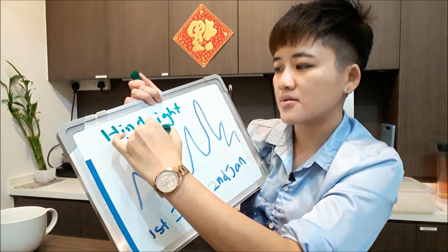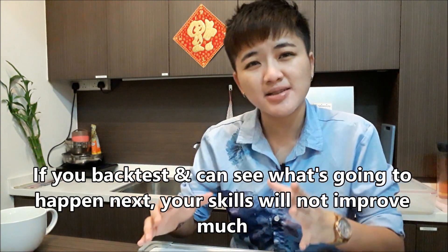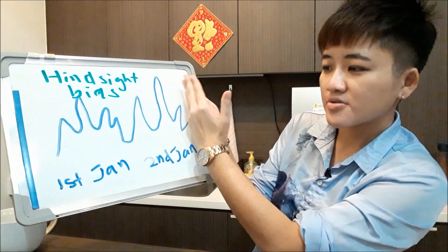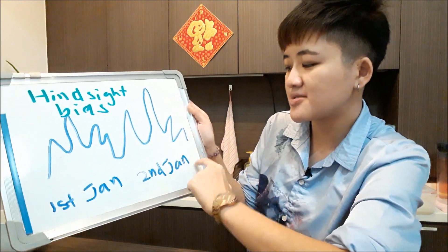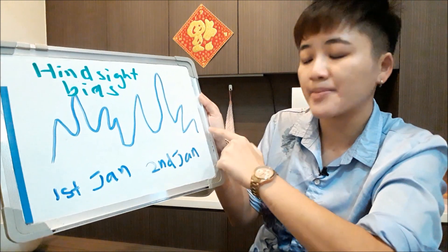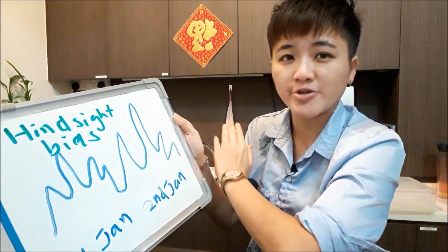This phenomenon is called hindsight bias. If you can see what's going to happen later, your mind won't be able to learn properly, because when you are trading live in the live market you are not able to see what's going to happen tomorrow or a few hours later. If you back test in such a way that you can see what's going to happen next, you aren't really trading live — you're just scanning and reading the charts. To back test properly, you need to scroll your chart all the way to the right so January 1st 6am is at the edge, with December 31st and December 30th behind it, so you can't see what happens after 6am on January 1st. Then as you back test, you scroll candle by candle.